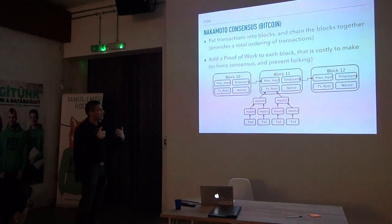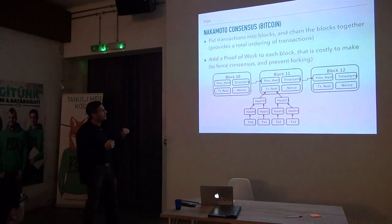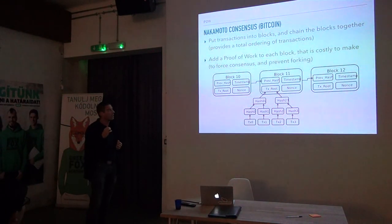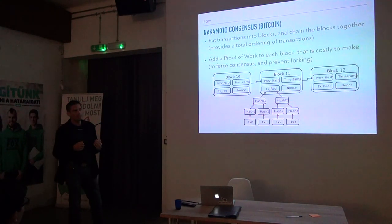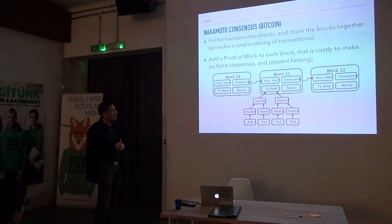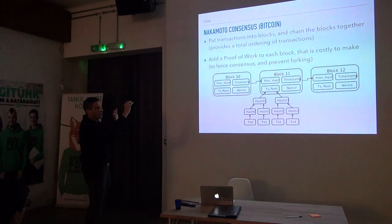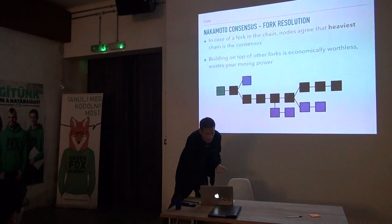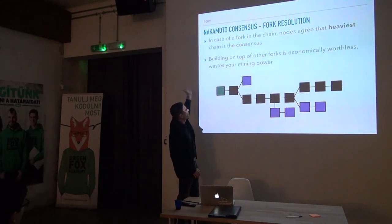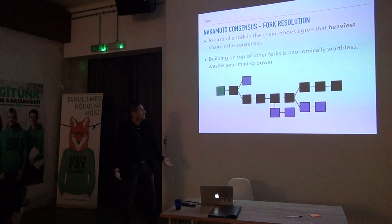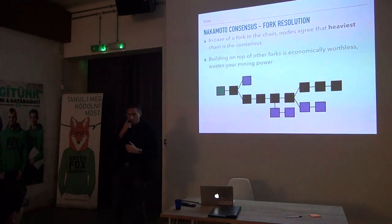That's the order of the transactions, and from the order of the transactions we can reconstitute the new state. One of the big inventions was to add a bit of proof of work onto these blocks — to make them hard to create. Why is it important to make them hard to create? Because if it's totally free to create them, it won't build a consensus. If people can just create blocks whenever they want, they will not necessarily create a single chain — they will create forks. So you'd have people putting blocks on top of old blocks — and what is the state then? Is this the state, or that one, or this other one?